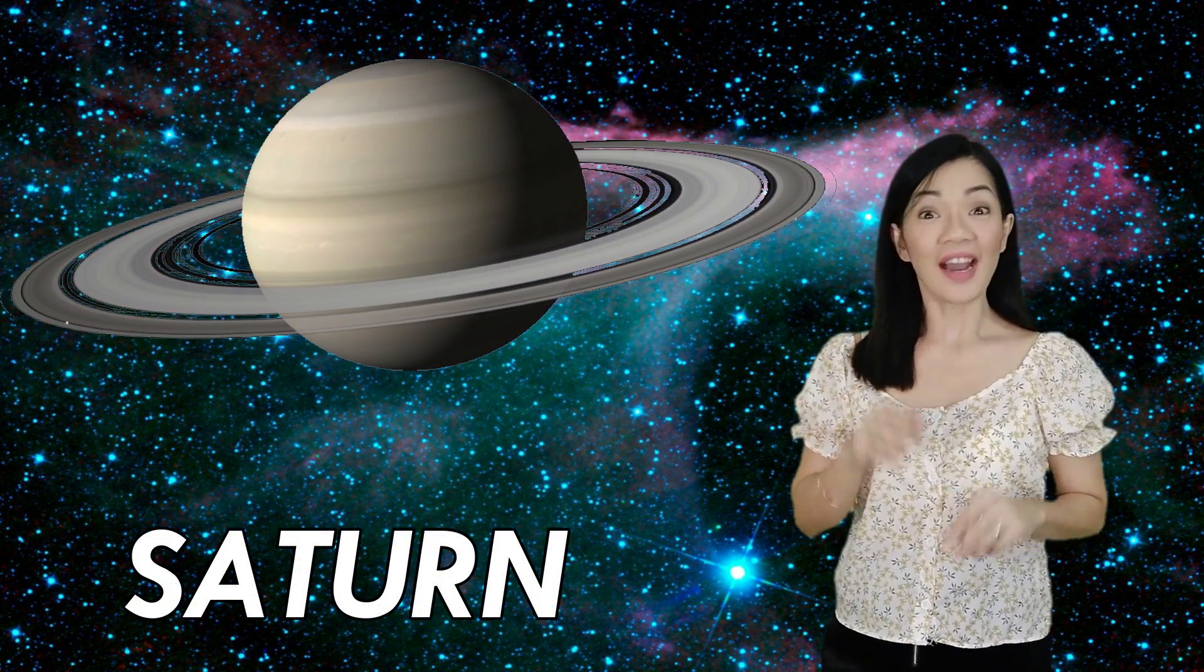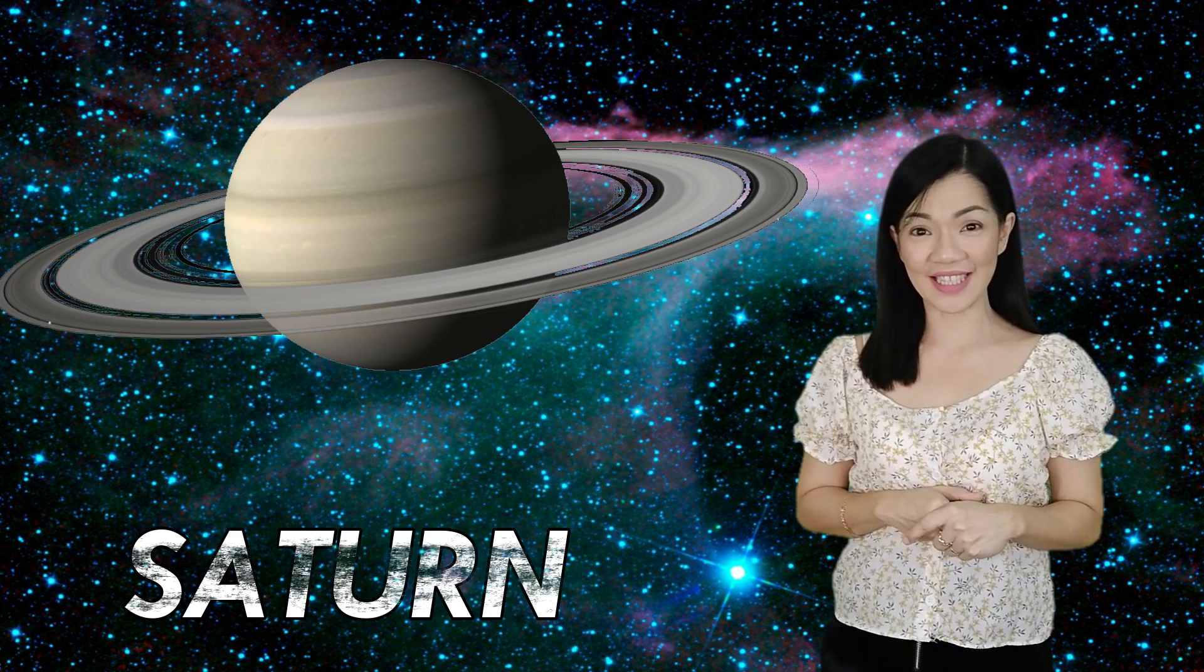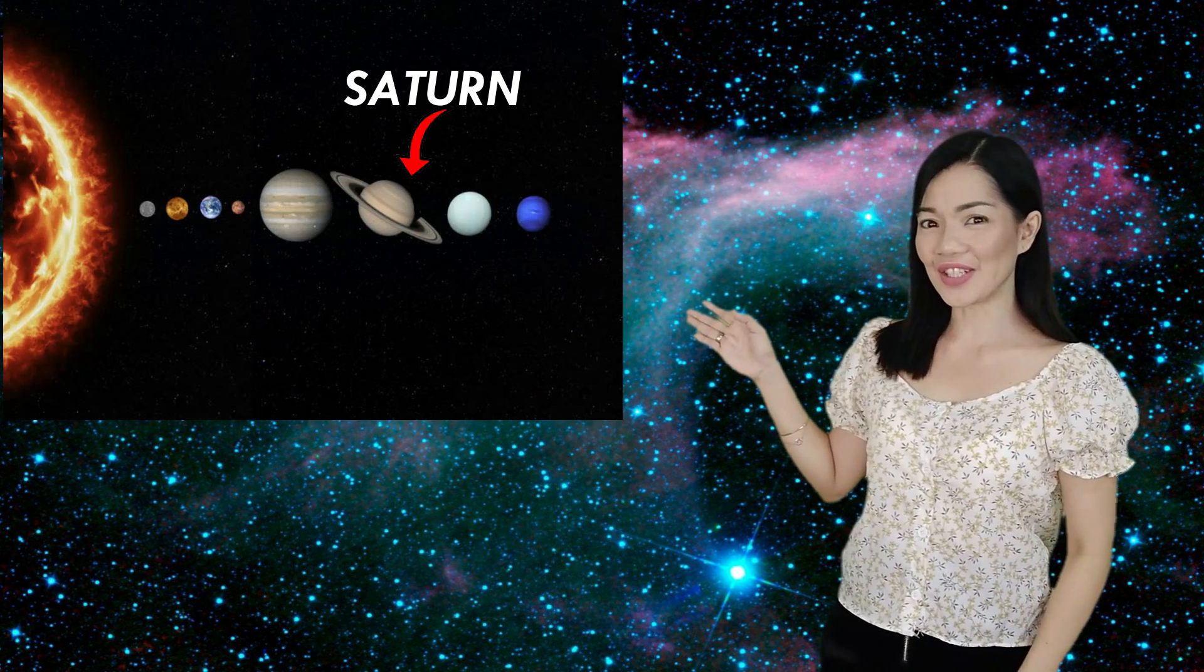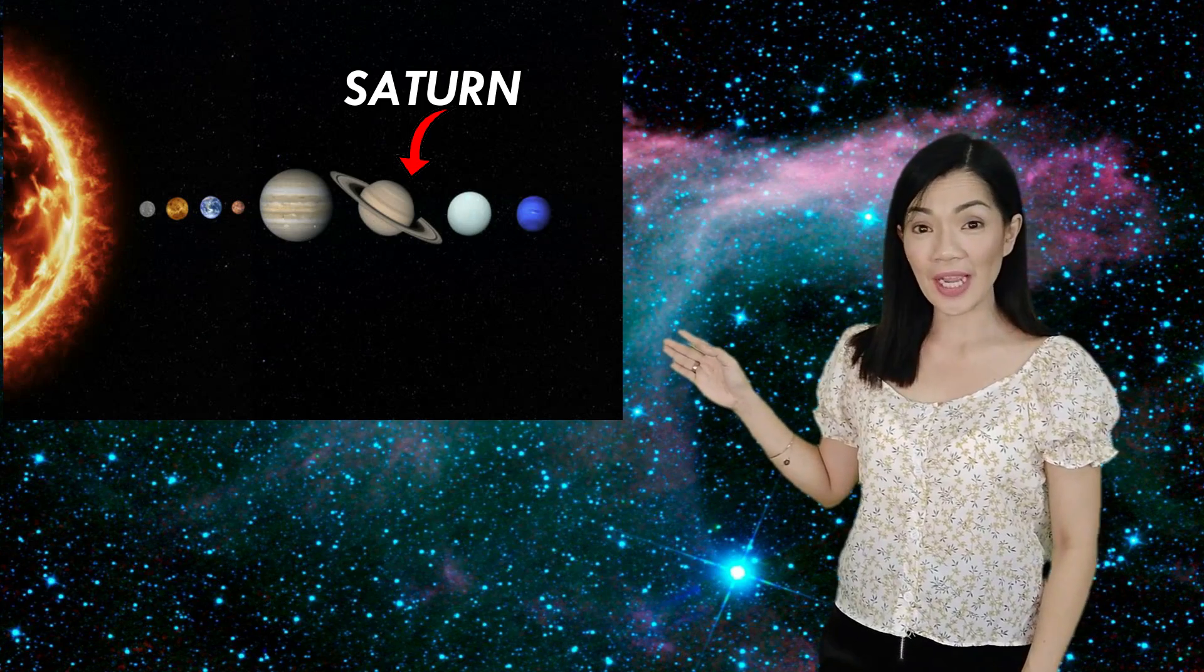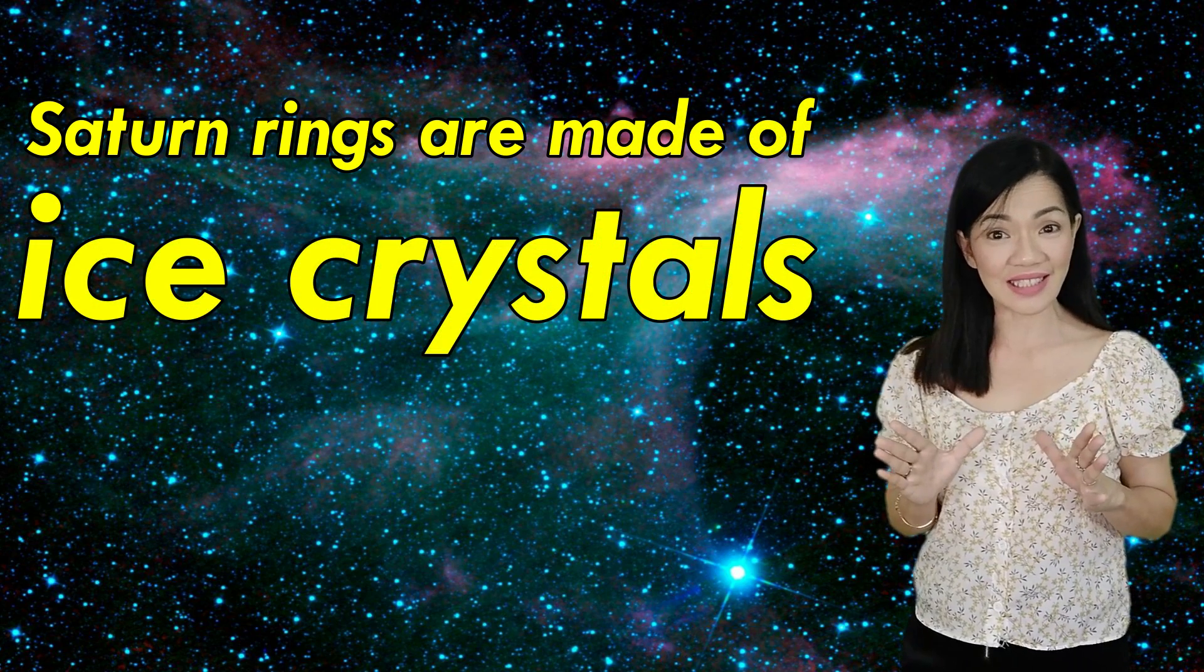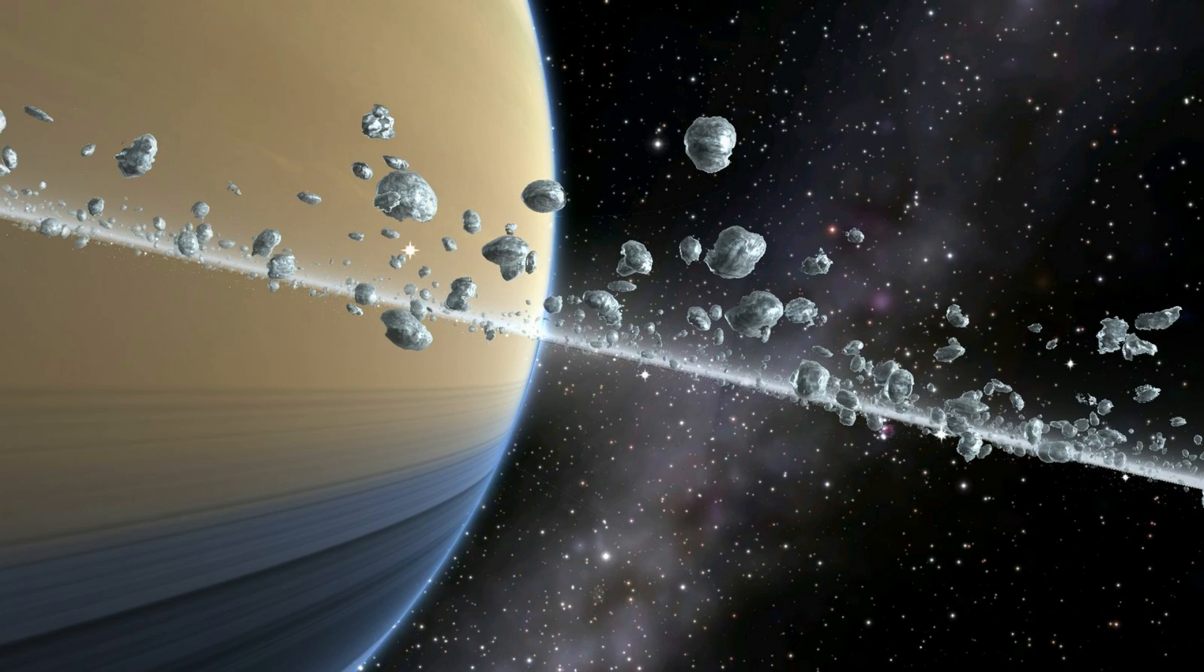The sixth planet is Saturn. Another gas planet. Here is Saturn. It's in between Jupiter and Uranus. Hey, did you know Saturn rings are made of ice crystals? Wow! How cold that could be. See? Icy rings. Those rings are made of ice.